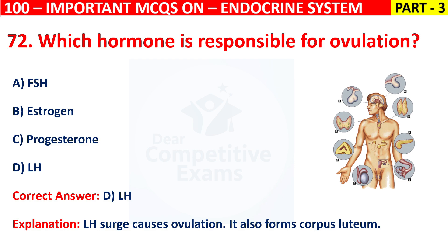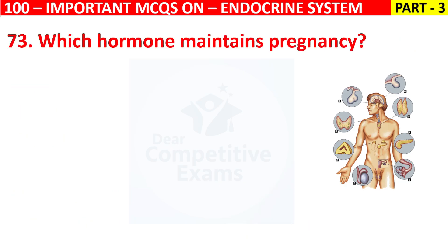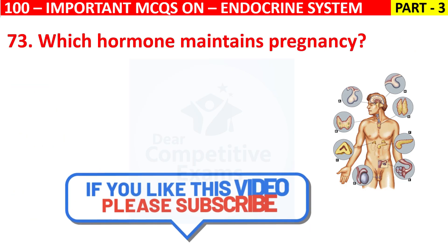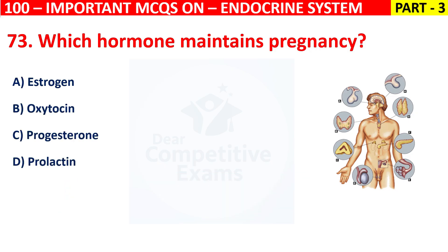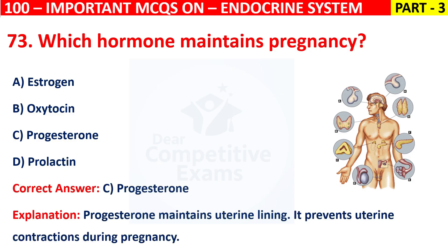Question 73: Which hormone maintains pregnancy? Your options are Estrogen, Oxytocin, Progesterone, or Prolactin. The correct answer is Progesterone. Progesterone maintains the uterine lining. It prevents uterine contractions during pregnancy.